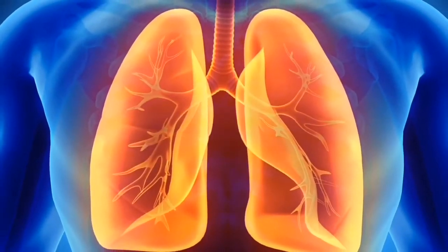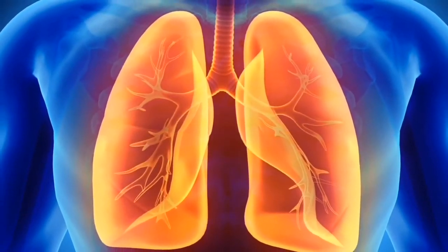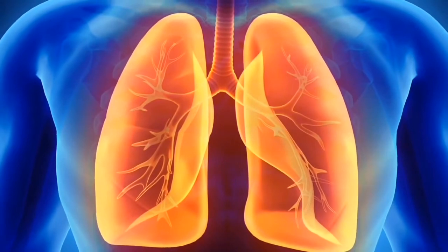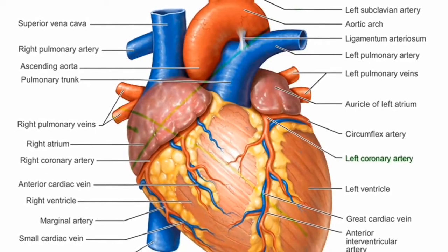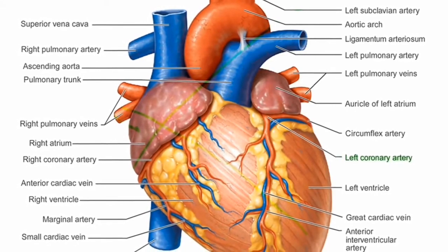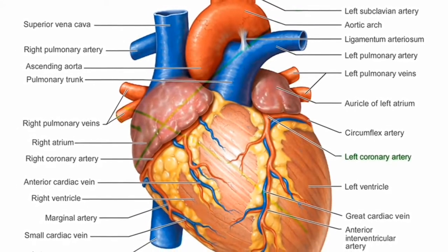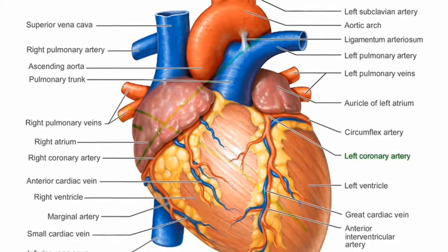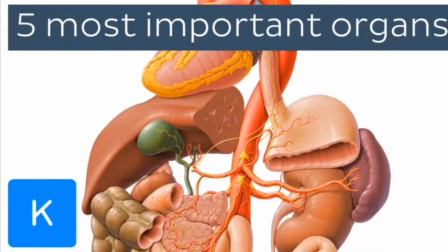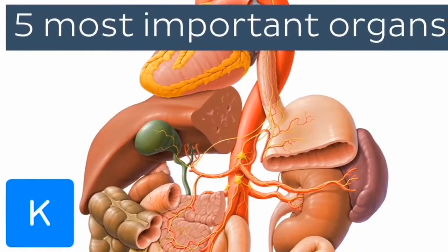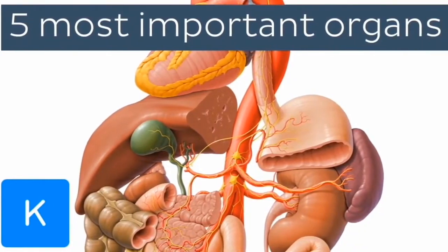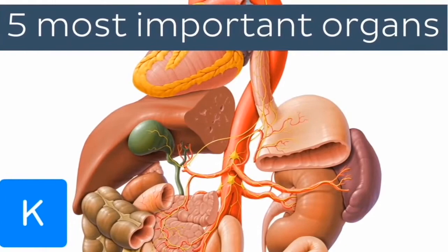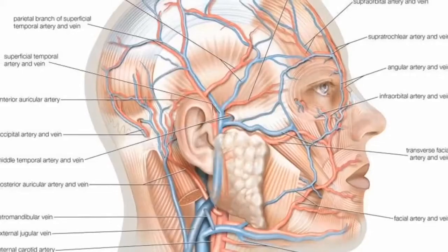To survive and reproduce, the human body relies on major internal body organs to perform certain vital functions. When two or more organs along with their associated structures work together, they become component parts of a body system.